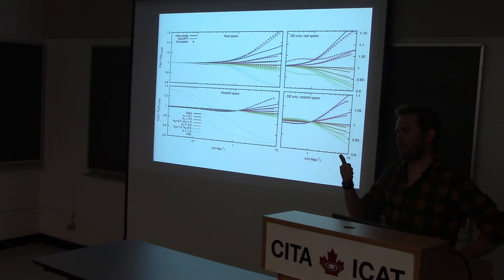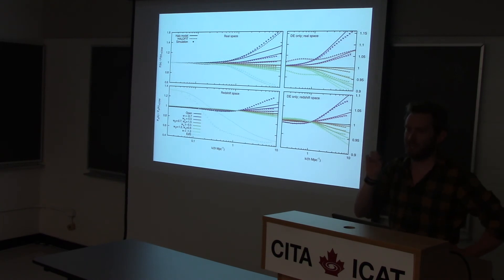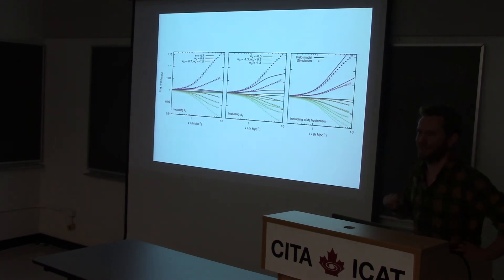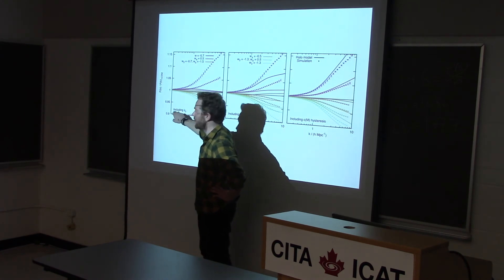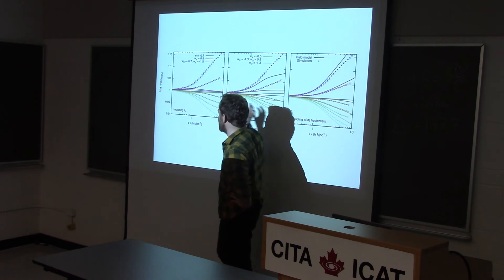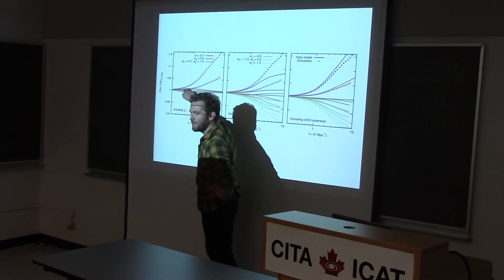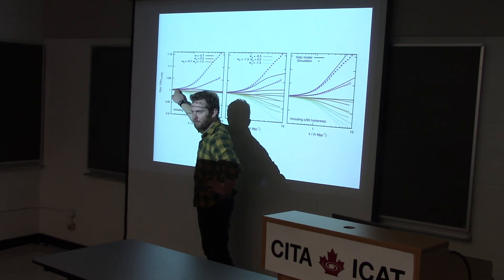This uses the Bullock et al. collapse prescription and also includes the cosmology dependence — for example, in the mass function, including that the barrier changes slightly with delta_C. If you compare what HaloFit gives you for these models, HaloFit predicts things that are wrong at the 5% level, and grossly wrong in some cases where the trend is wrong and the wave number at which departures start is wrong. But this completely parameter-free model — all we've done is run spherical collapse calculations and then do a halo model calculation — gets the answer bang on for the dark energy models.